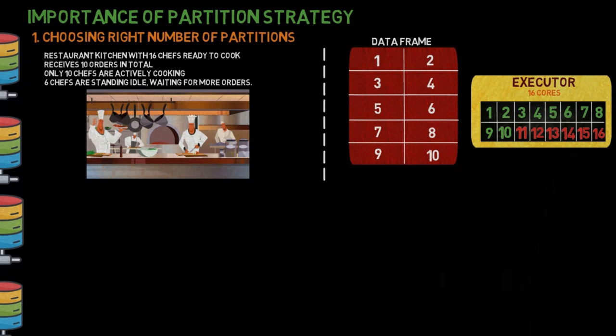Tip: to ensure effective parallelism and resource utilization, aim for two to three times the number of partitions as there are cores in the cluster.